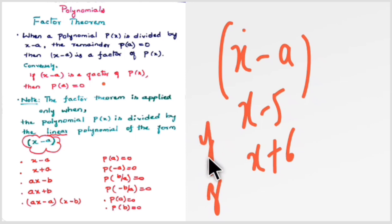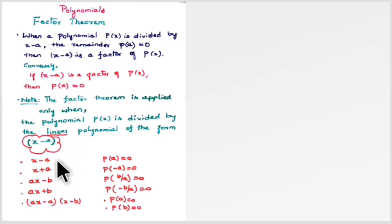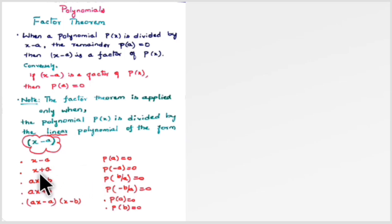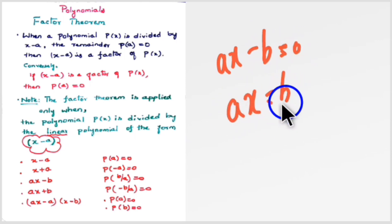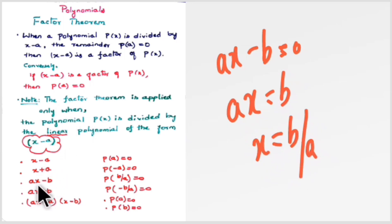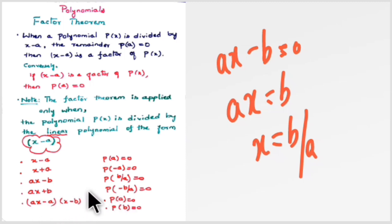Note the different forms the divisor could take: if it is (x − a), then p(a) = 0; if it is (x + a), then p(−a) = 0. For (ax − b), solve for x: ax = b, so x = b/a, meaning p(b/a) = 0. For (ax + b), p(−b/a) = 0. If the divisor is of the form (ax − a)(x − b), you solve for both values and get p(a) = 0 and p(b) = 0.